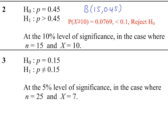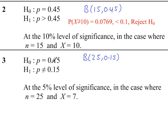Question 3: we have a random sample of size 25, and p is 0.15, so this is the binomial table we go to. It's a two-tailed test, so we have to split the 5%, and we're going to work with 2.5%, or 0.025.